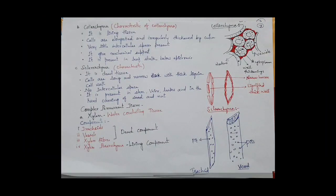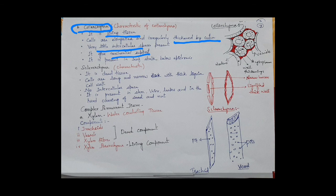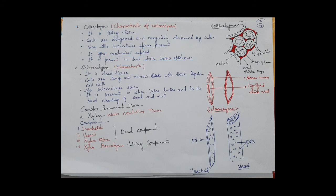The second type is collenchyma. The characteristics of collenchyma: it is a living tissue, cells are elongated and irregularly thickened. Very little intercellular space is present. It gives mechanical support to the plant and is present in leaf stalks below the epidermis.